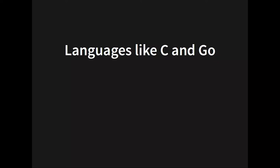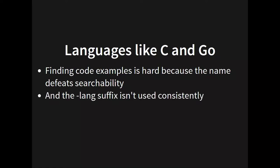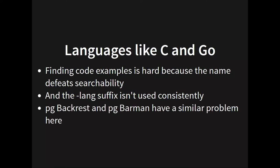Languages like C and Go have a big problem with discoverability — their terms are almost entirely unsearchable. You can add 'lang' to it but that doesn't necessarily come through the algorithm. Taking a side note: if you Google for pgBackRest you're going to get a lot of stuff from the Sharper Image catalog, and if you Google for Barman you're going to get vodka tonics. Maybe not the best names we could have picked for those tools.